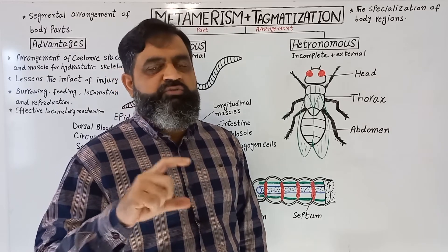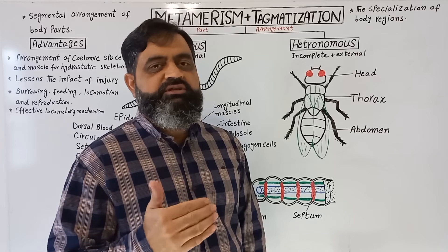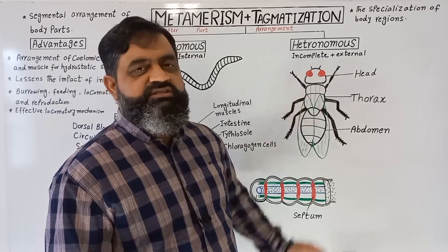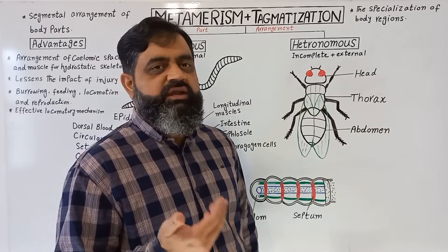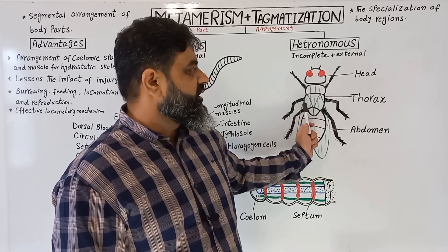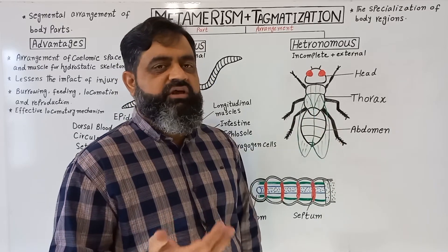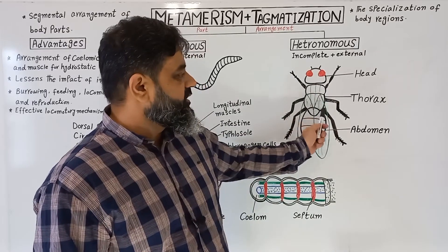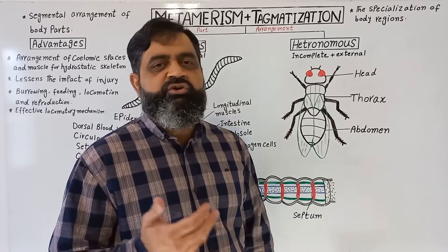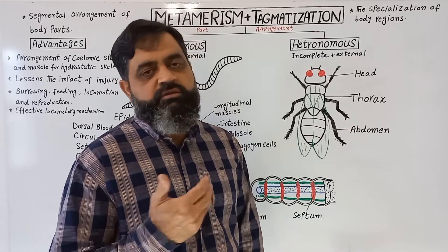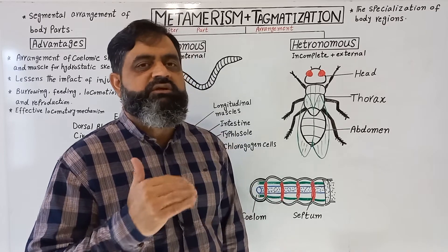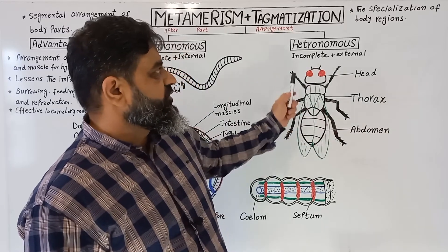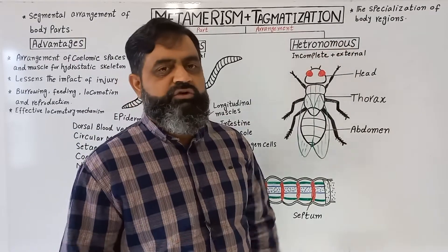Each body segment can only be seen from externally — this separation is not internal to the body, and each tagmata has a different role. For example, the head has sensory organs including compound eyes, antennae, and brain. The thorax contains appendages which help in flying, running, and walking, including wings. The last tagmata, the abdomen, usually contains reproductive organs, digestive system, and other body parts. These segments have divided their roles — that is why each body part has a different role, and this is known as tagmatization: the specialization of body regions.